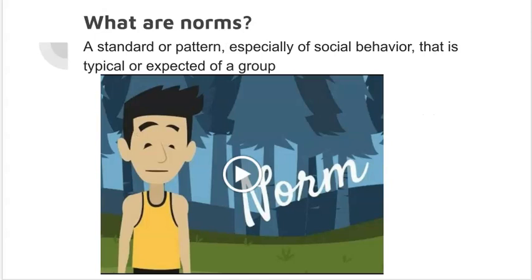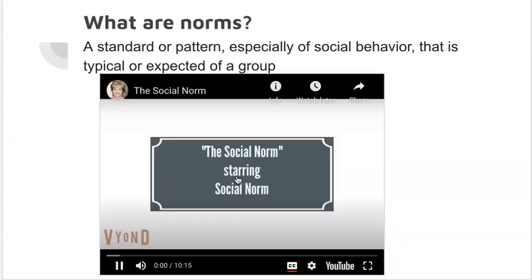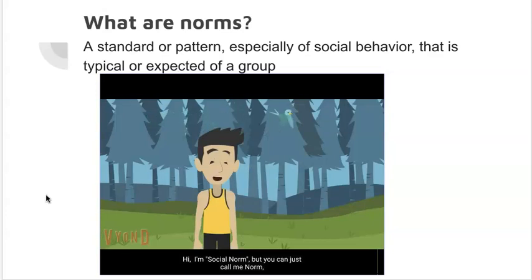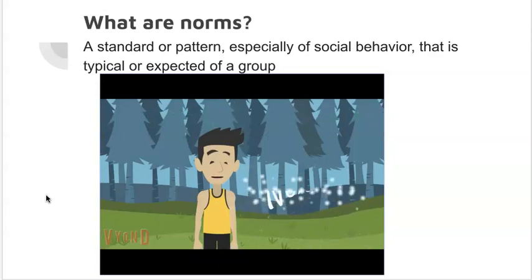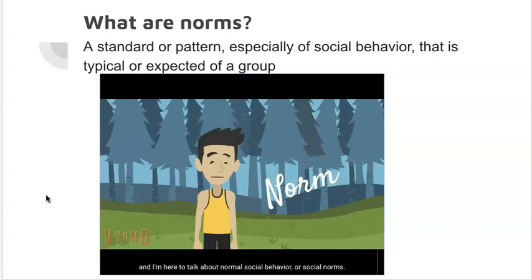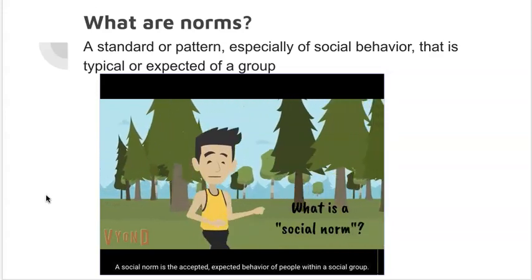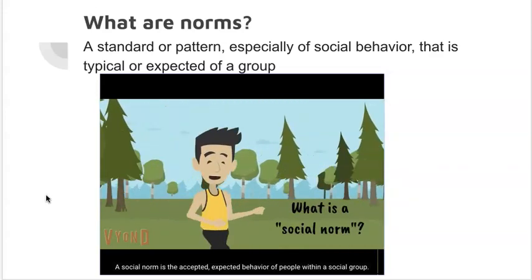Here's a short video embedded in the slides. A norm is a standard or pattern, especially of social behavior, that is typical of an expected group. A social norm is the accepted, expected behavior of people within a social group.